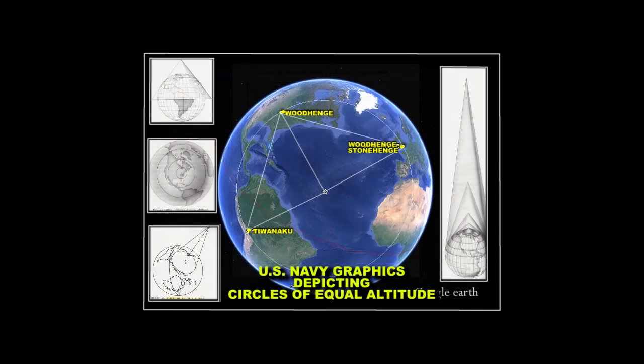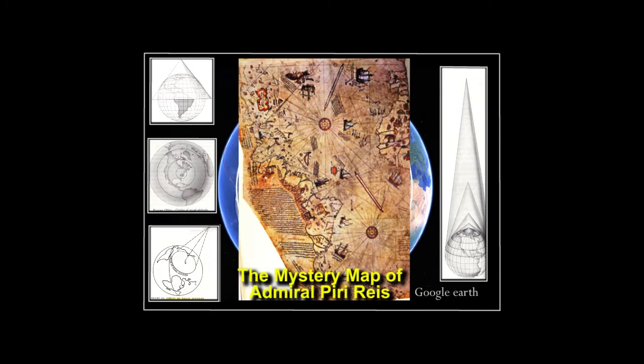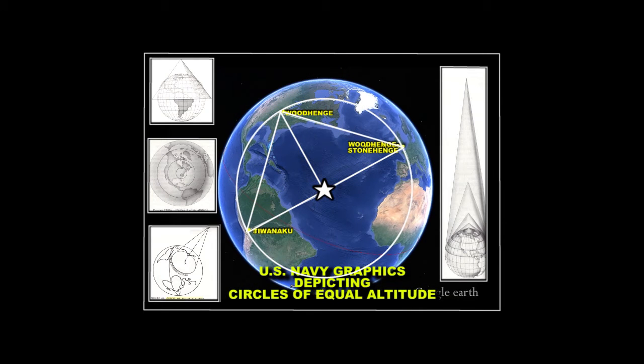This seafaring culture fulfilled their master plan of creating an accurate map of the entire Atlantic seaboard. And they did so by developing this ingeniously devised circle of equal altitude, so all other points of geodetic interest could be subsequently tied to this ingeniously derived circular baseline.